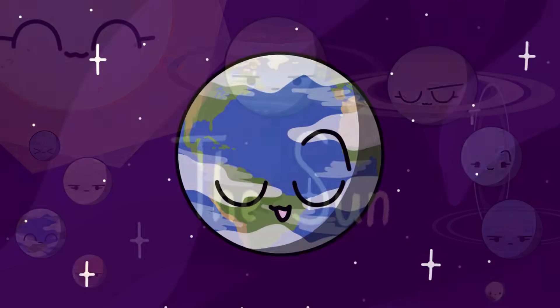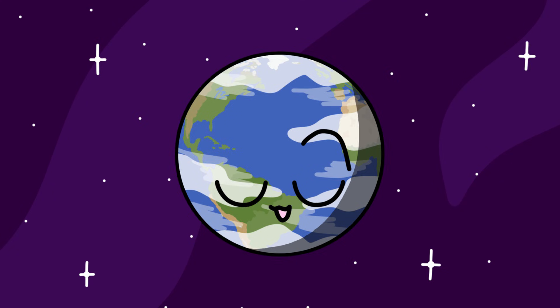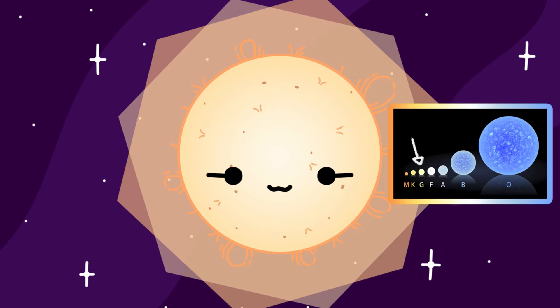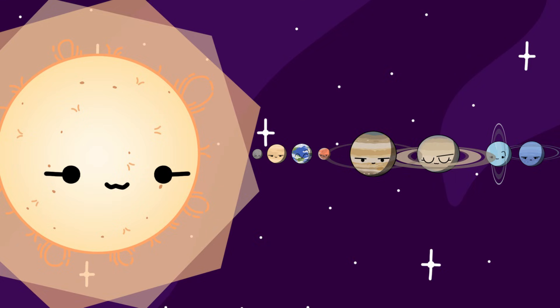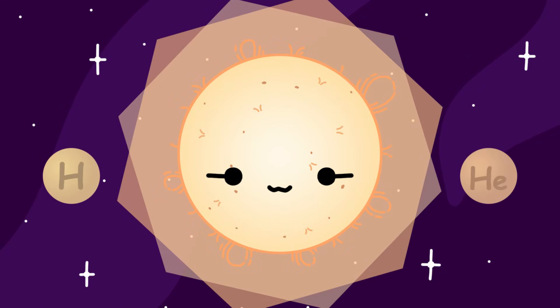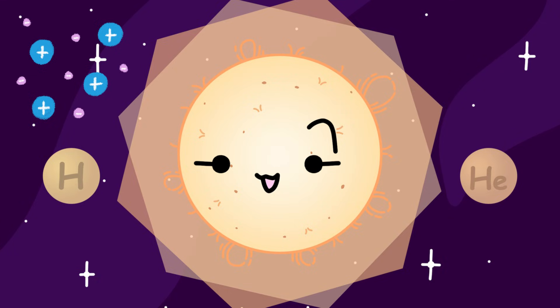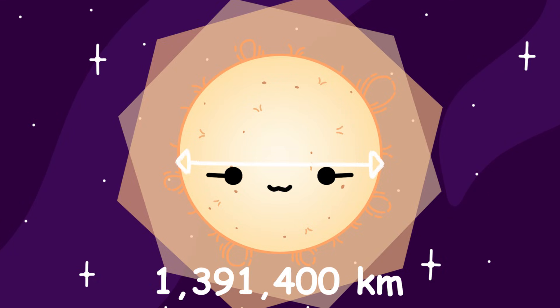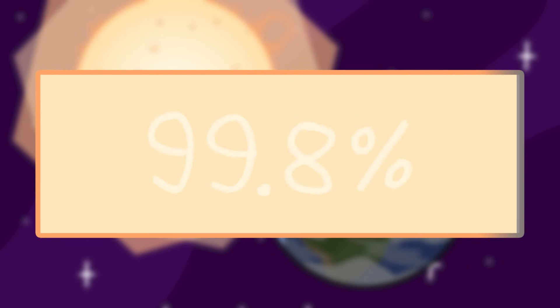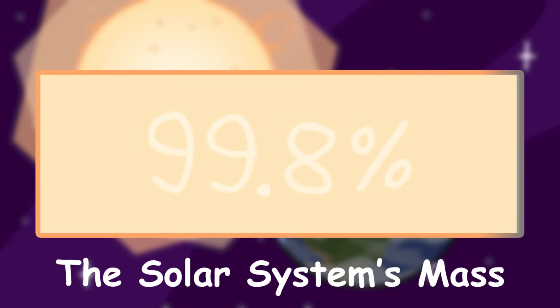The Sun. Let's start off with the center of our solar system, the Sun. The Sun is a G-type main sequence star and is the center of our solar system. The Sun is mainly made of hydrogen and helium, with some trace elements in a plasma state. It has a diameter of 1,391,400 km, or about 109 times the diameter of Earth.